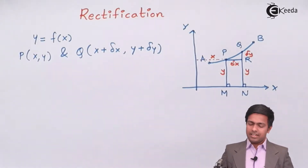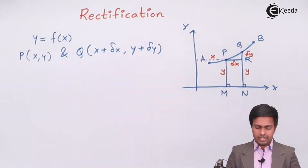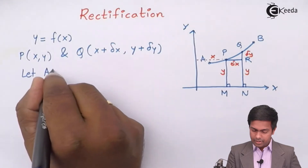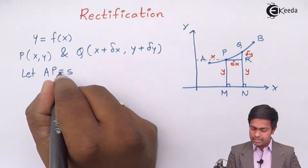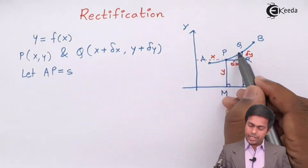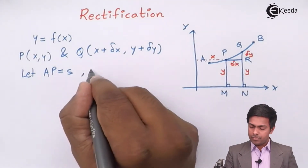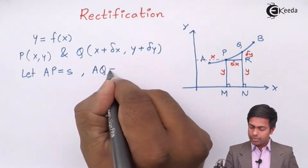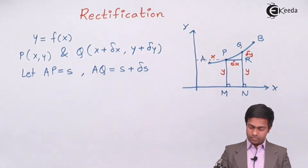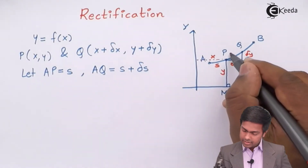Let the length of arc AP be s, so AP = s. Let PQ = Δs. This means AQ = s + Δs. So the arc from A to P is s and the small arc from P to Q is Δs.